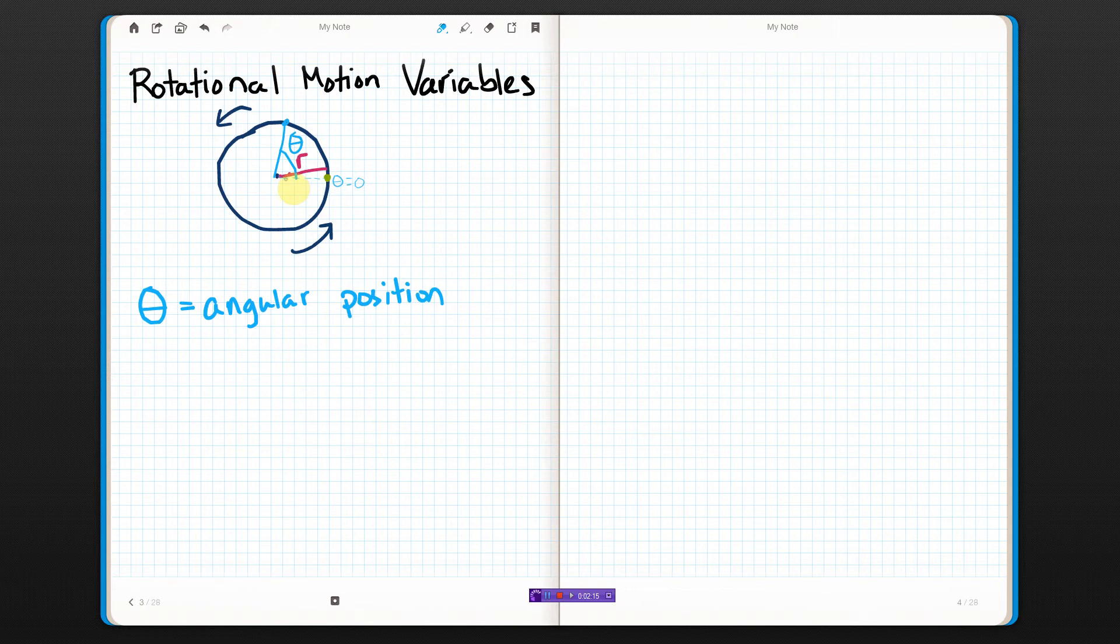Basically, how much angle did you pass through to get from where you started to where you ended? One way you could find that is if you take the arc length, this length right here, and divide by the radius, you should get theta. So that's one way you can define theta.